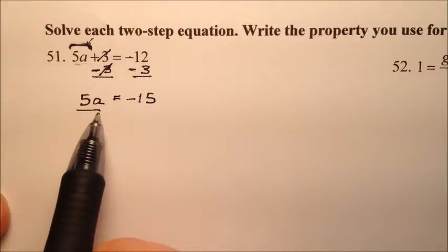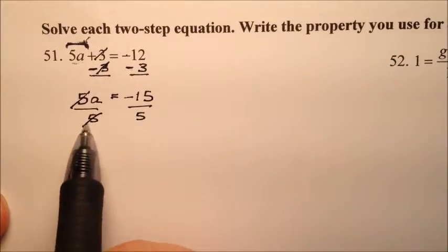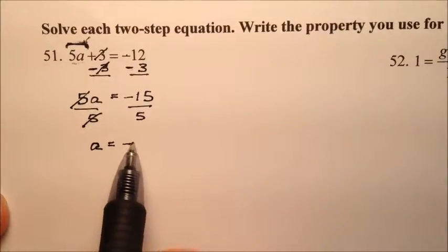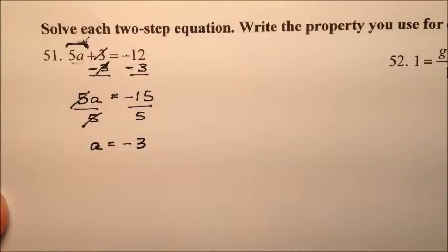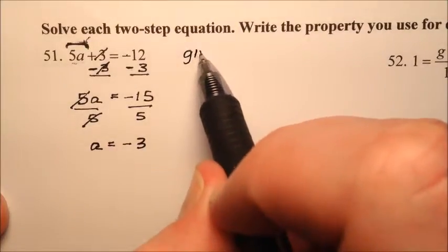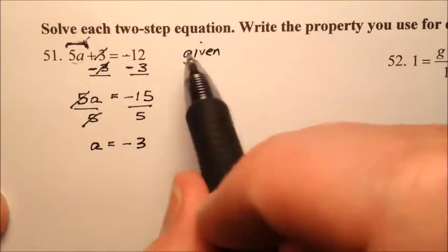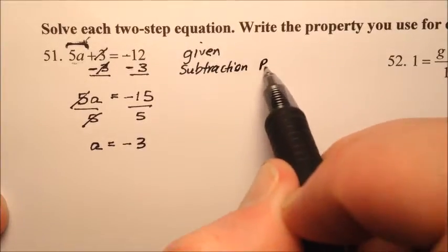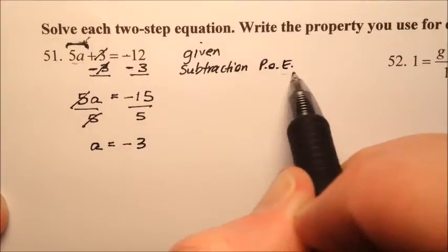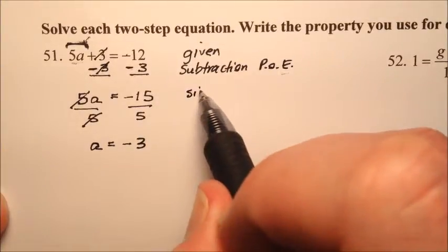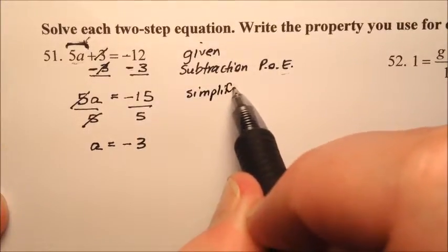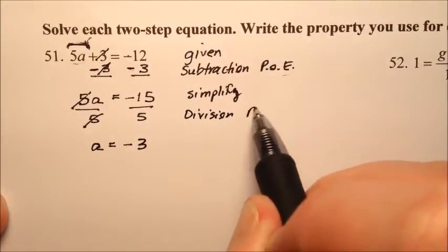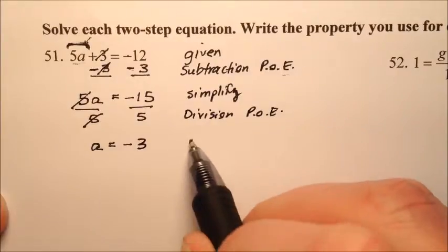Now divide both sides by 5. That cancels the 5s and gets a all by itself. Negative 15 divided by 5 is negative 3. The steps were: given, subtraction property of equality (POE), simplify, division property of equality, simplify.